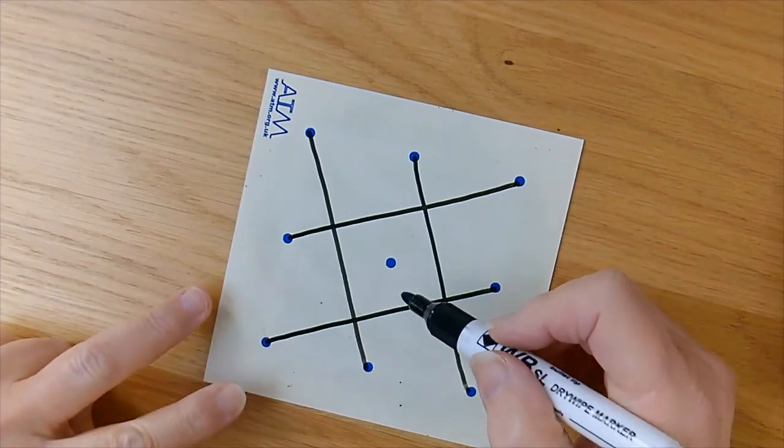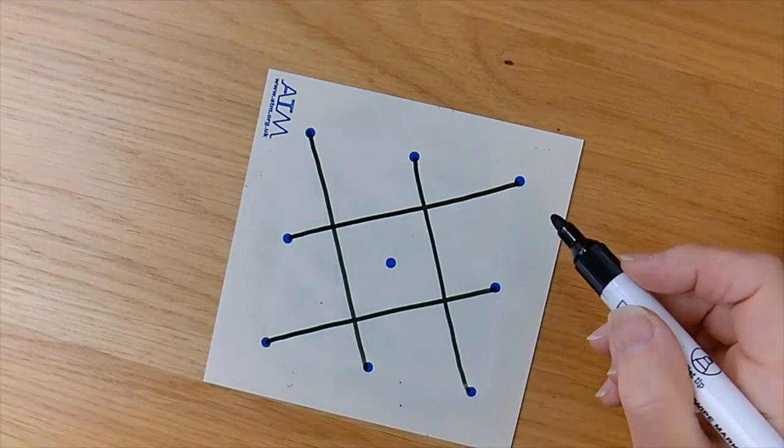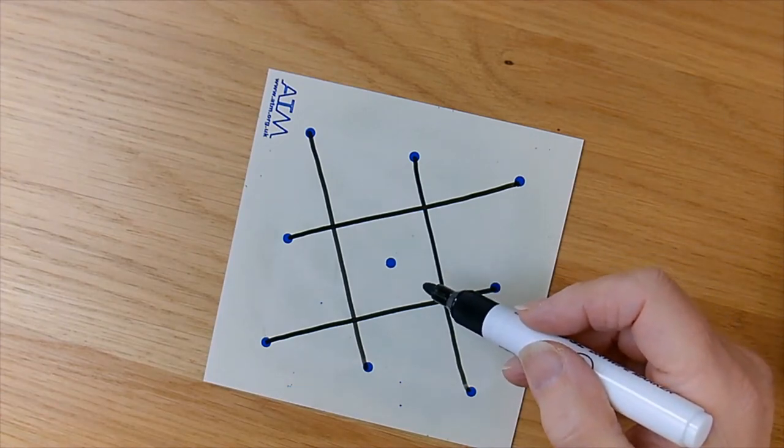And you can see a shape in the middle. So what questions can you ask? It looks like a square. Is it a square?